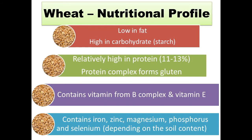Wheat protein ranges from 11 to 13 percent and forms a special complex called gluten. The gluten in wheat grain is now a concern because some people have a gluten allergy. Wheat is also a source of vitamin B complex and vitamin E. The wheat grain also contains iron, zinc, magnesium, phosphorus, and selenium, but their concentration depends upon the fertility level of the soil.